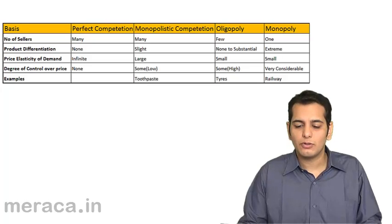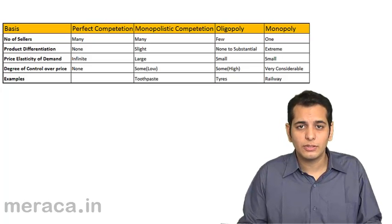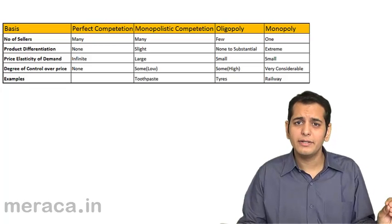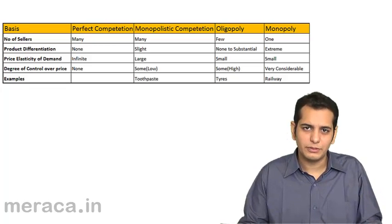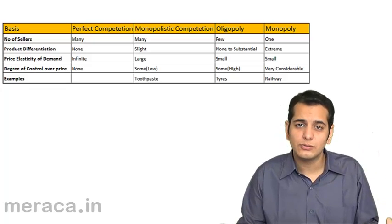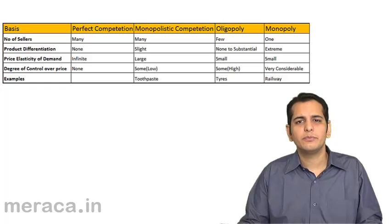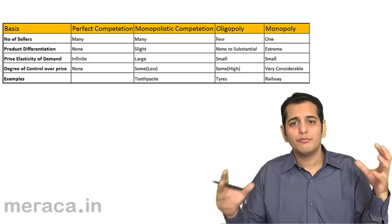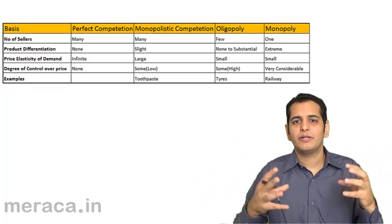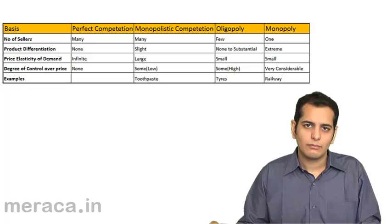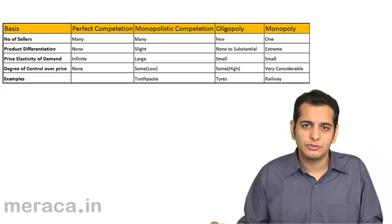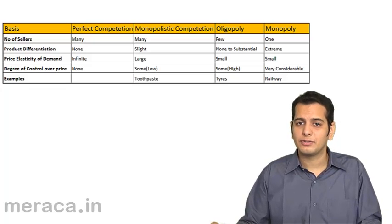Next, monopolistic competition is a market which is almost similar to perfect competition. There is only one distinguishing factor: in perfect competition, homogenous goods are sold — identical, similar goods which look alike and have the same features. But in monopolistic competition, there is a slight differentiation in the goods. Other than this, all other factors remain the same.